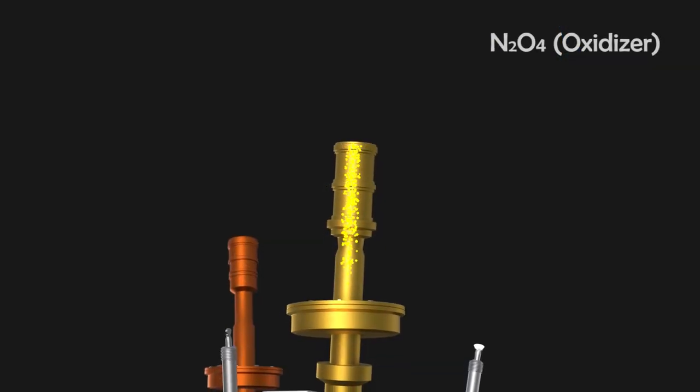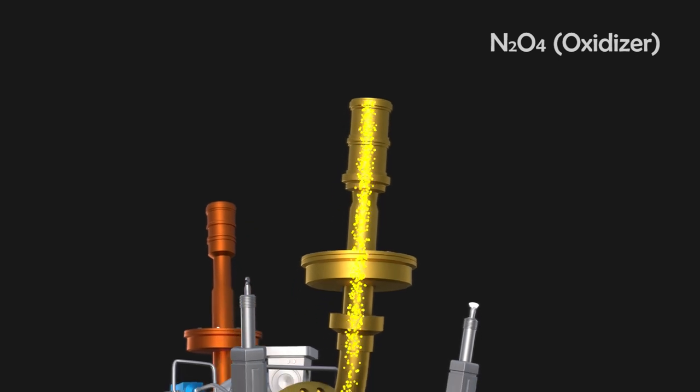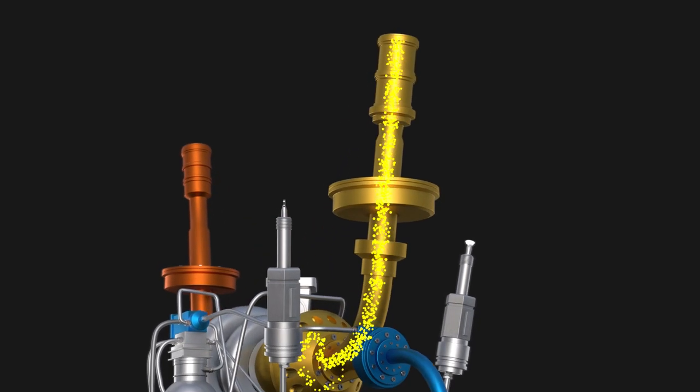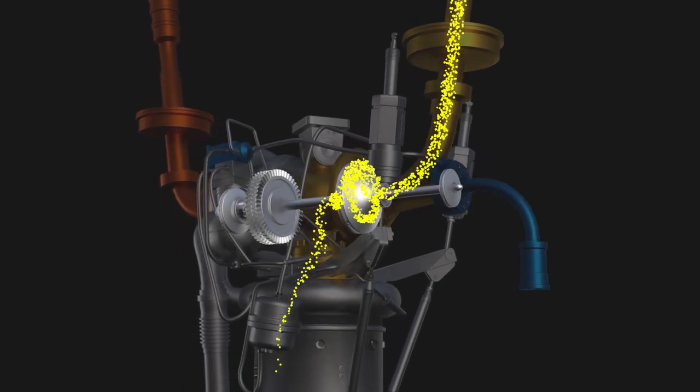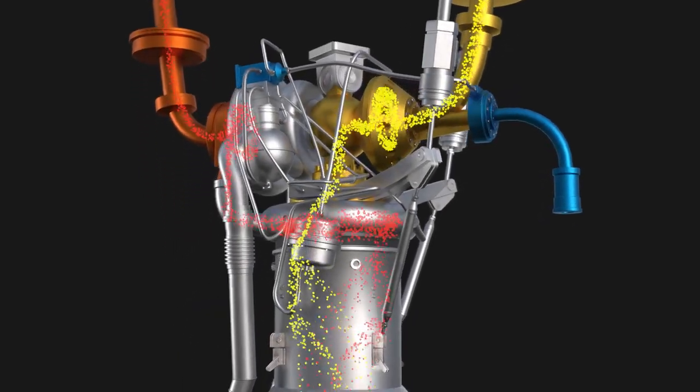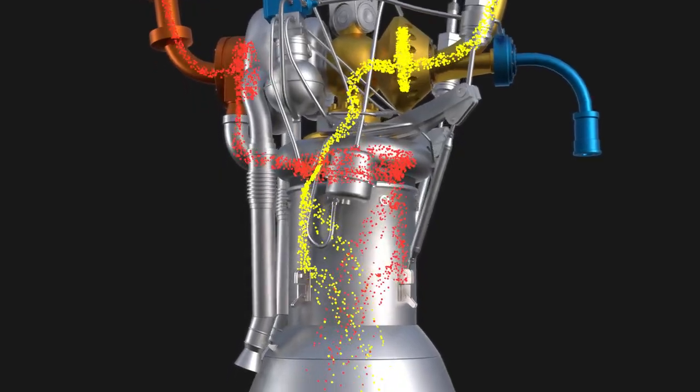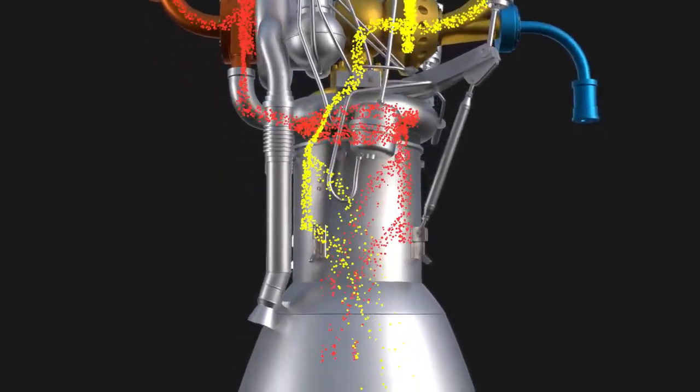Similar to that, the oxidizer comes from the main tank, and it is also pumped through the centrifugal pump to the combustion chamber, and it also comes out from the nozzles, and mixes with the fuel to produce high-temperature and high-pressure exhaust.